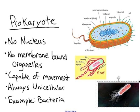We're going to start with prokaryotic cells because they were the first cell type we believe to ever exist on this planet. Prokaryotic cells are very simple and not very complex. They do not have a nucleus, and they do not have any membrane-bound organelles.